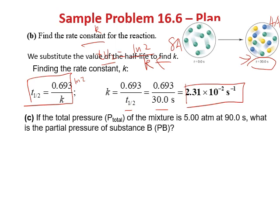Whenever you can measure the half-life, you can calculate the rate constant k for a first-order reaction.